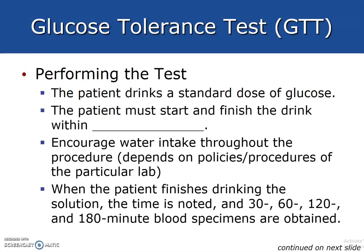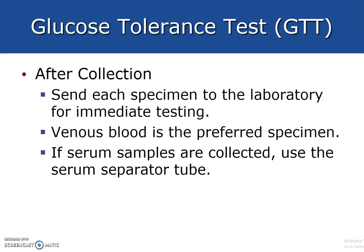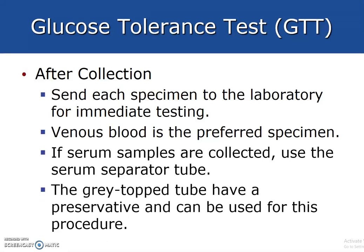To perform the GTT, instruct the patient to drink a standard dose of glucose — they must finish the drink within five minutes — and encourage water intake throughout the procedure depending on lab policy. When the patient finishes the solution, note the time, then draw at 30, 60, 120, and 180 minutes depending upon the test ordered. Specimens go to the lab. If serum samples are collected, use a serum separator tube and allow the specimen to clot. The gray top tube has a preservative to prevent glucose breakdown and can also be used.